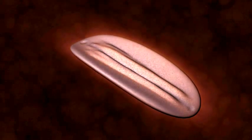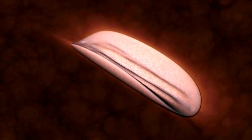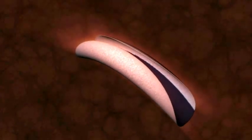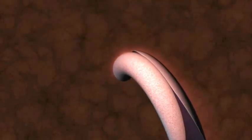As the cells on one side of the disc grow faster than those on the other side, the whole disc rolls into nested tubes that will become the gut canal and other tissues.